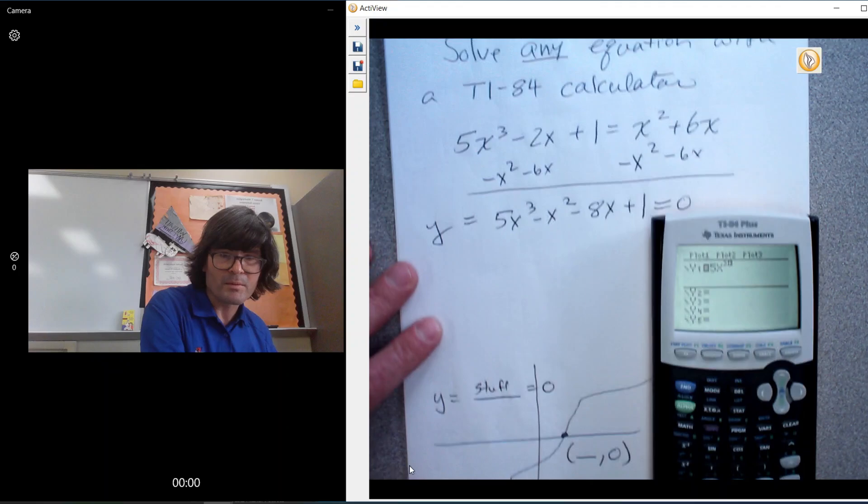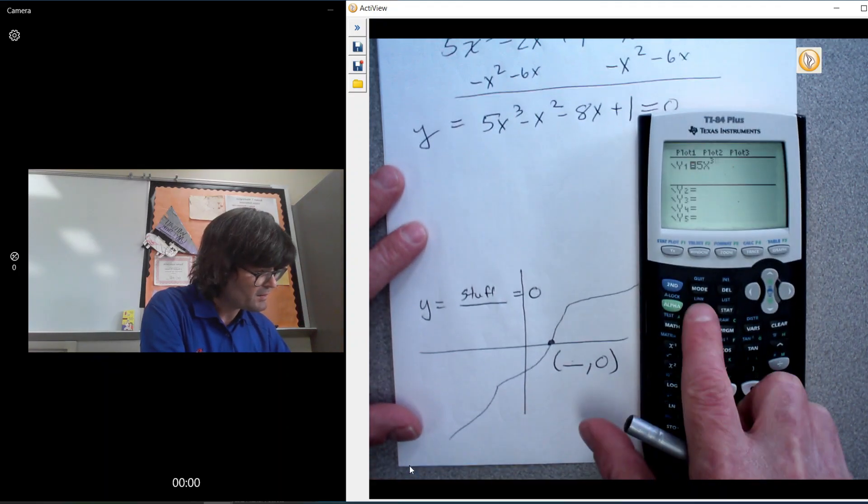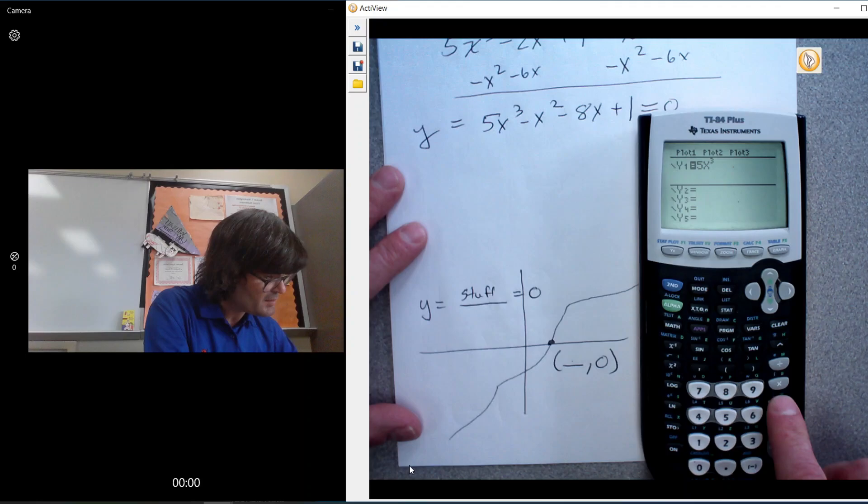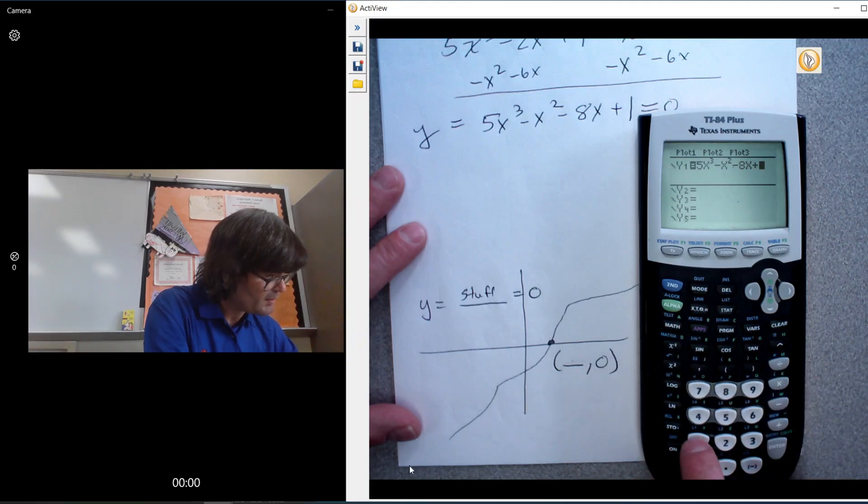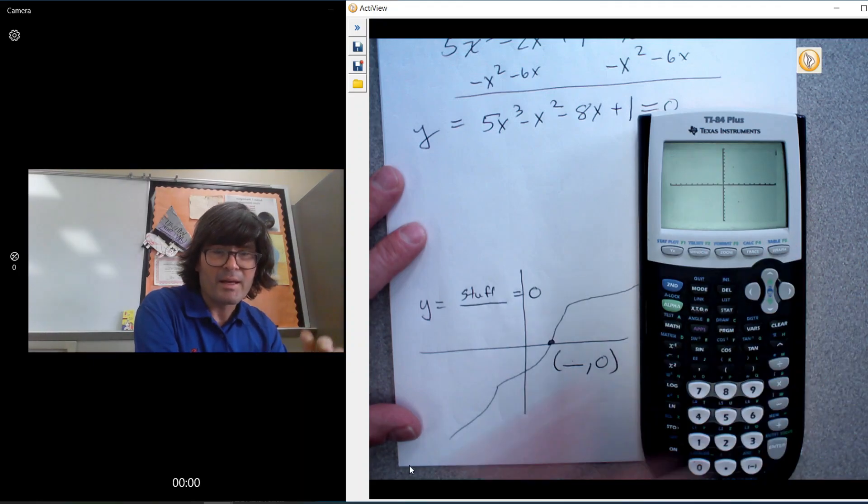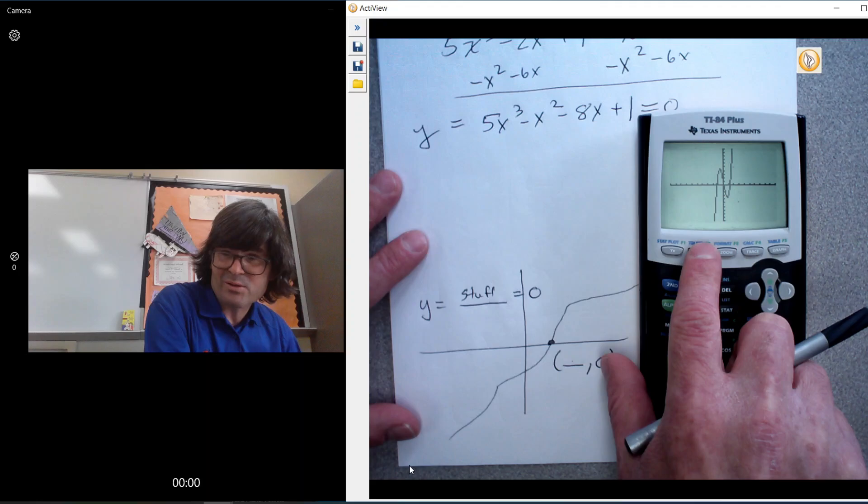Let's type in 5x³. My 5x carat key cubed right there. And next is going to be minus x² and minus 8x and plus 1, and we'll hit graph. And this is my standard 10 by 10 window. You can see that there's three places that we cross. I'm going to actually zoom in on this a little bit so I can see it better.